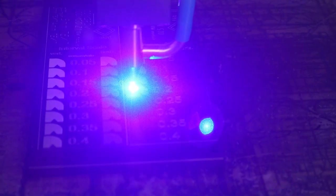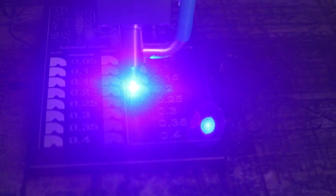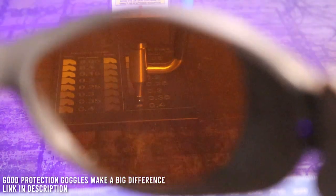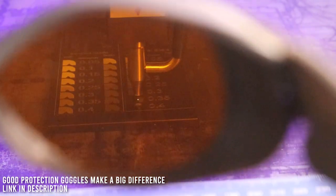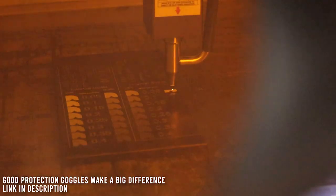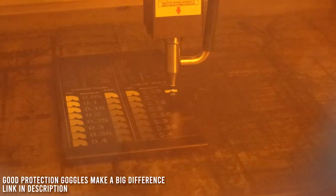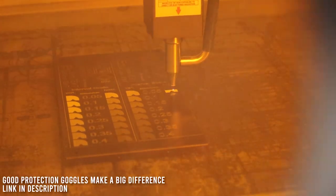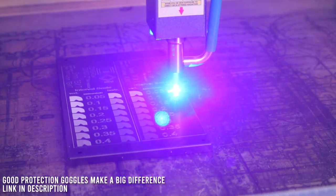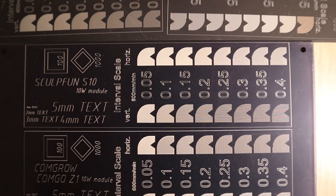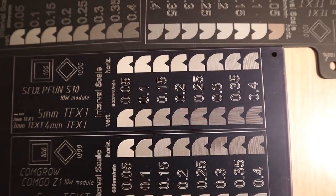Next, I engraved the test pattern on black anodized aluminum. This test shows the engraving precision, laser dot size and shape. The main feature of this test is the interval test in vertical and horizontal direction to further evaluate the laser spot shape as the engraving on anodized aluminum comes out very crisp and detailed and therefore it is easy to clearly identify the laser spot size.